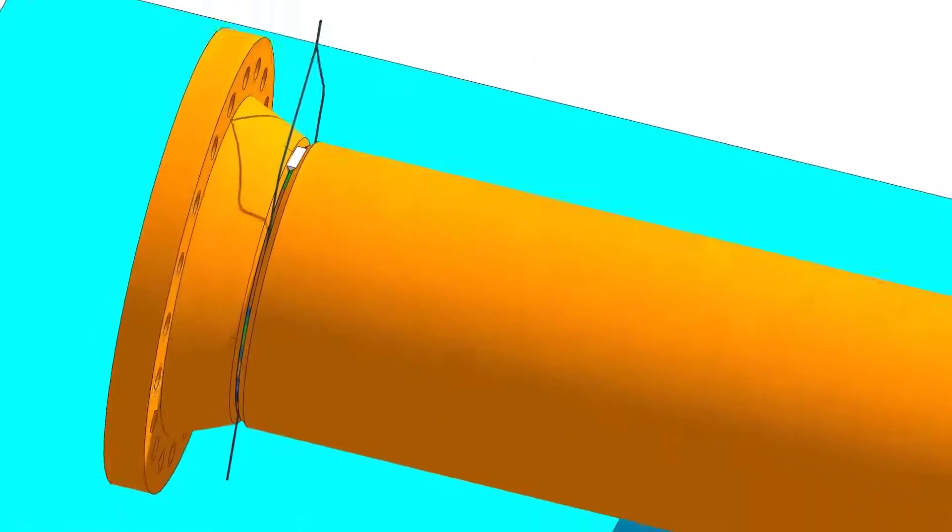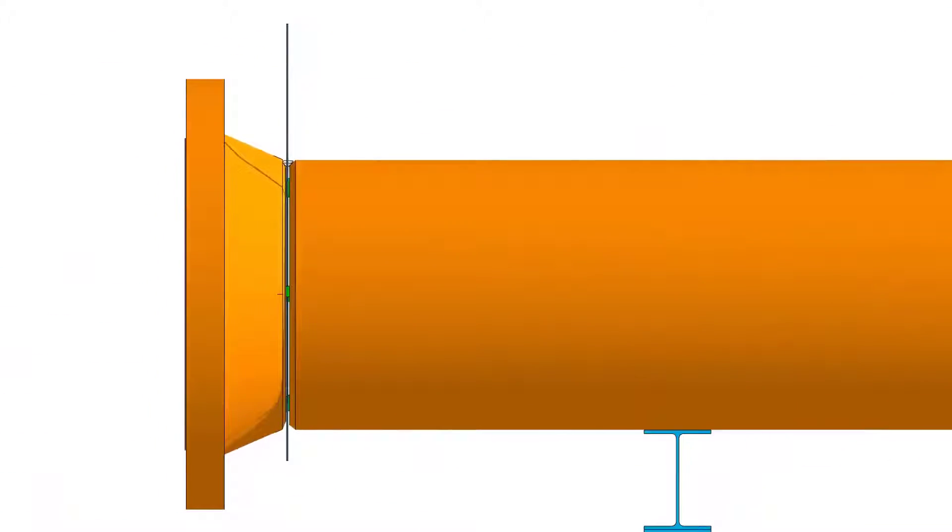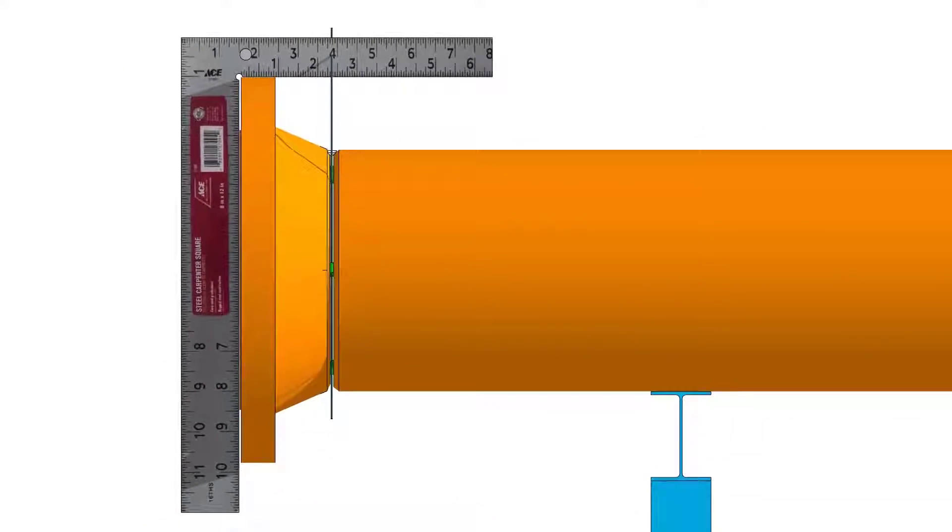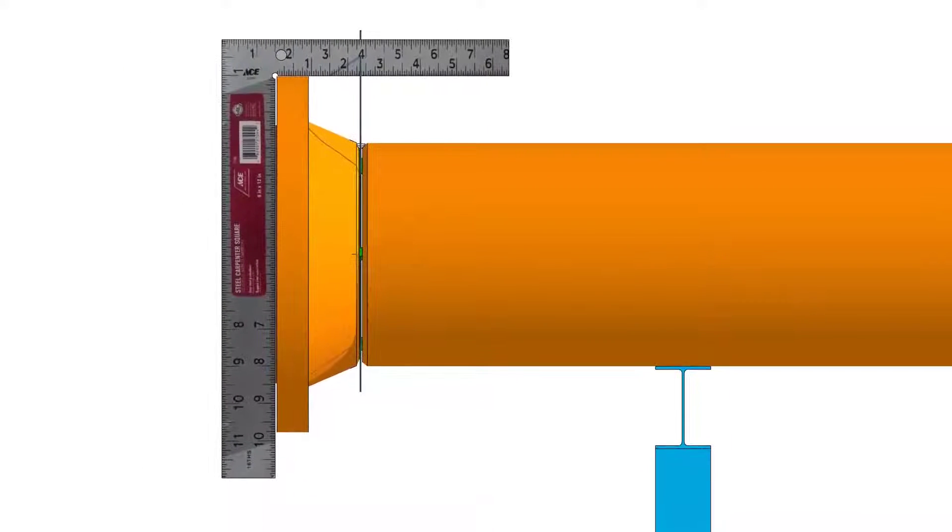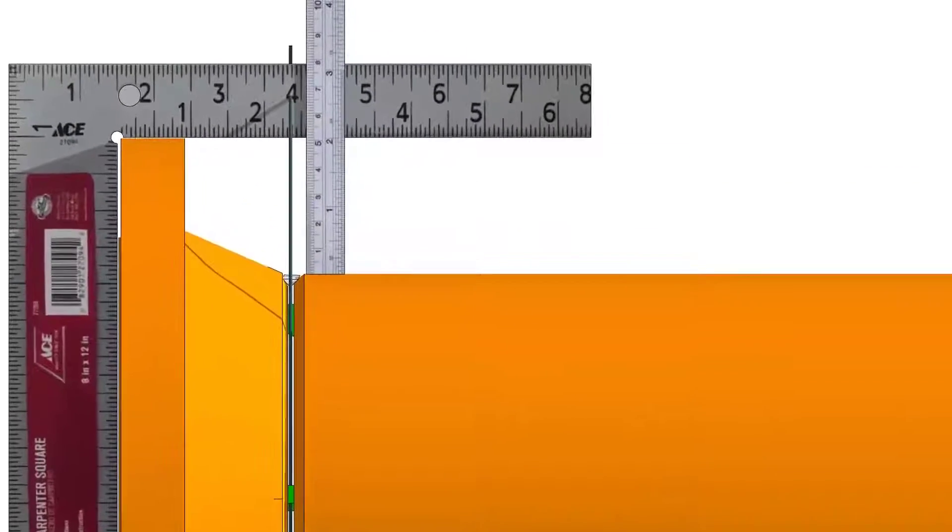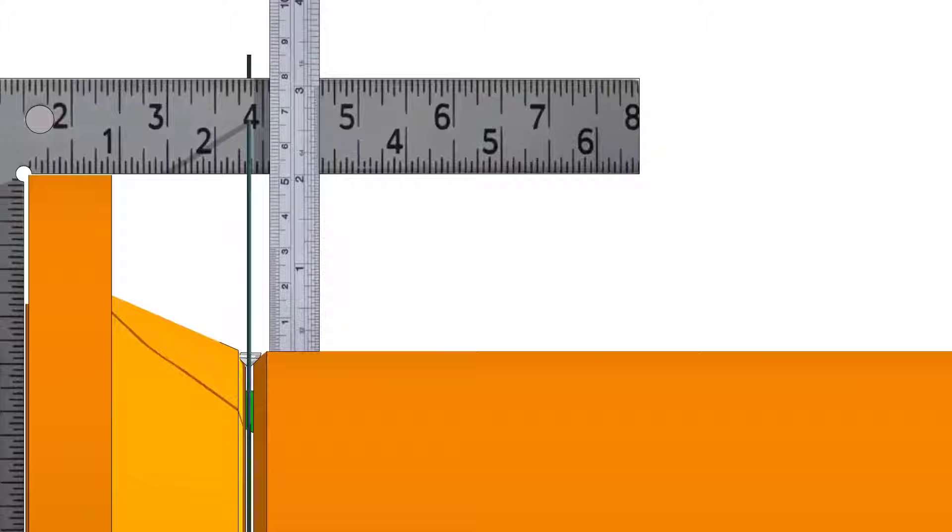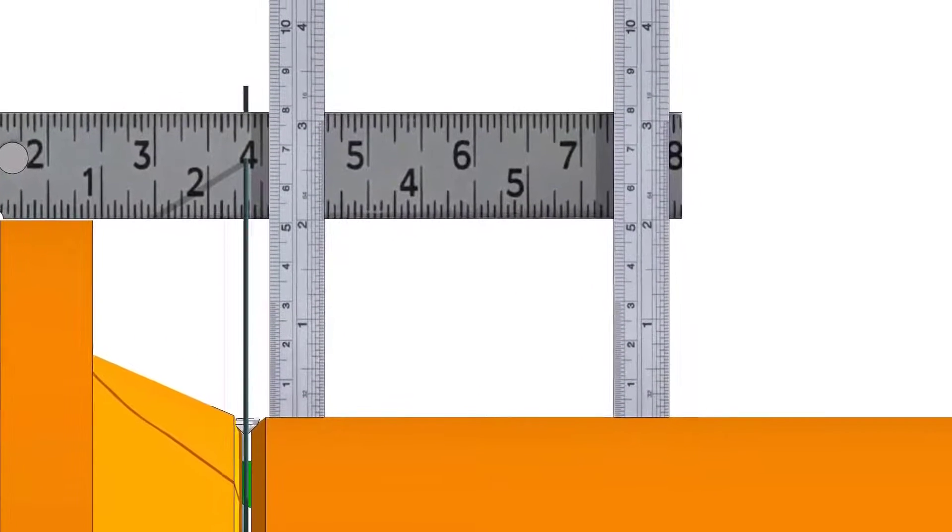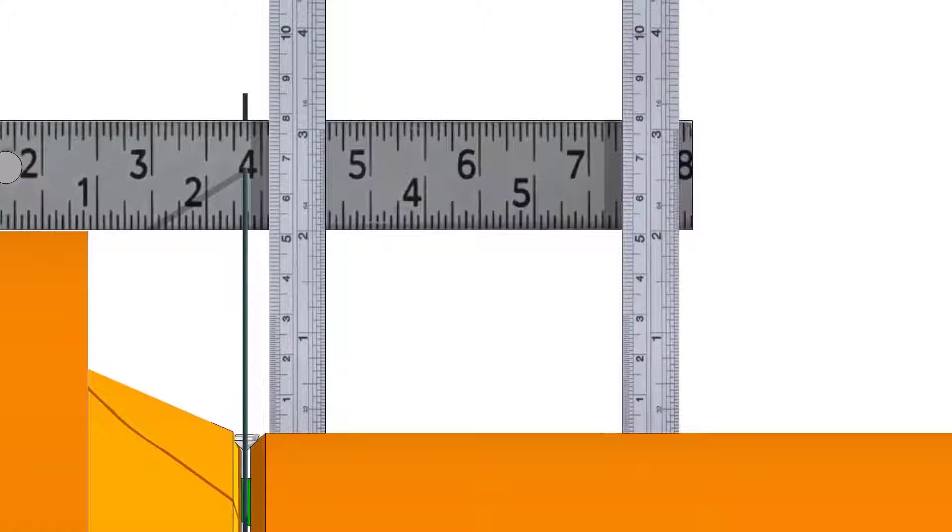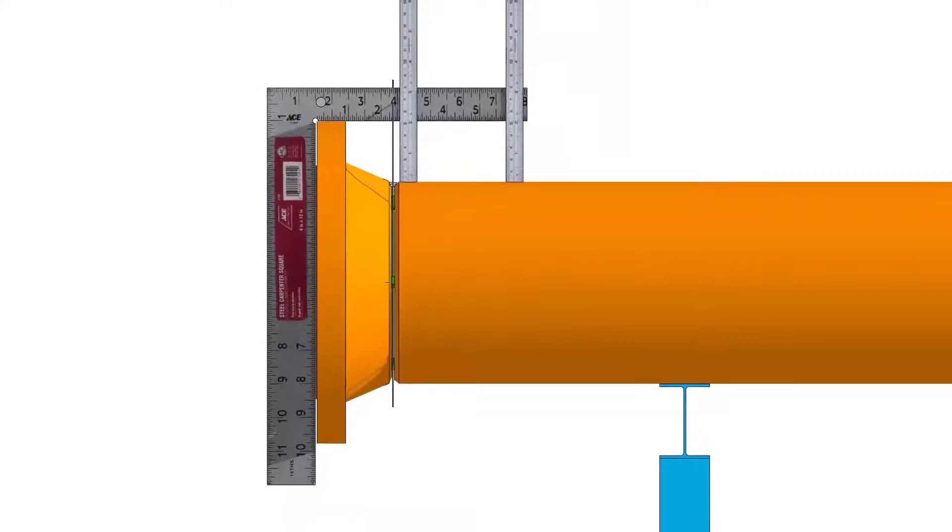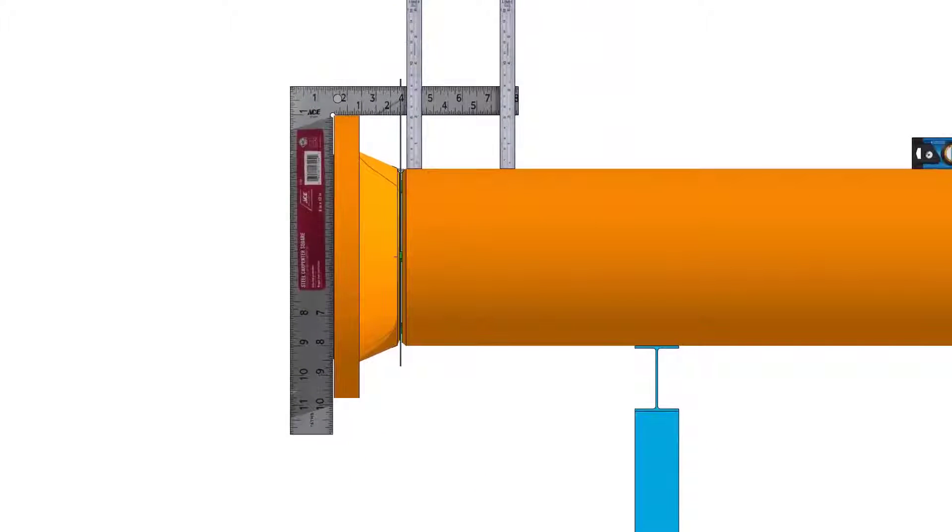Check the vertical squareness of the flange with the pipe. If the vertical squareness is acceptable, tack weld at the bottom of the joint.